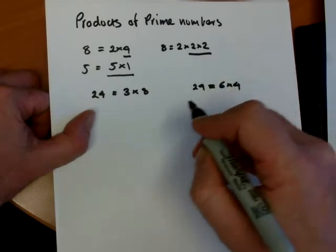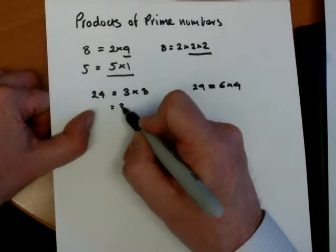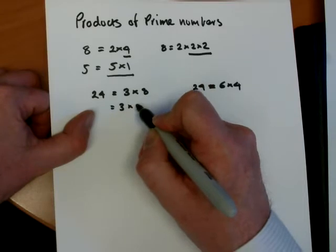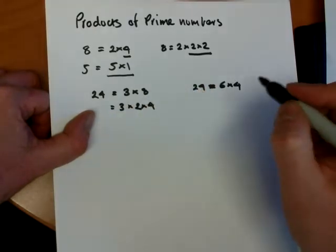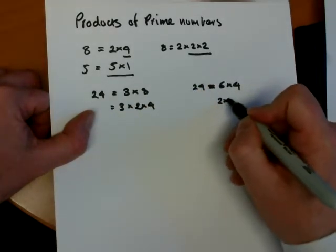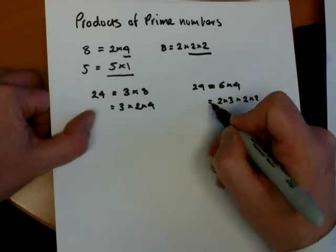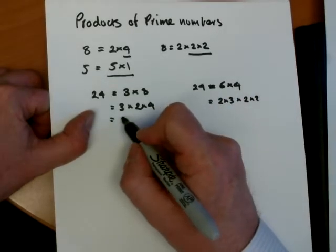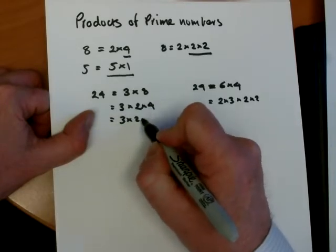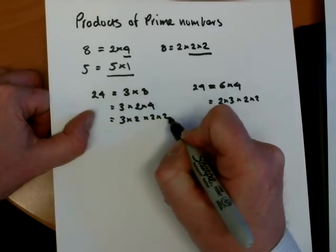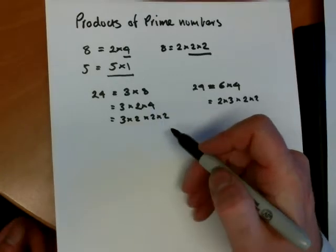We're not finished yet because this can be broken down further to 2 times 4. The 8 and the 6 can be written as 2 times 3, and the 4 can be written as 2 times 2. And we come back on the left-hand side, 3 times 2 times 2 times 2, changing that 4 at the end to 2 times 2.